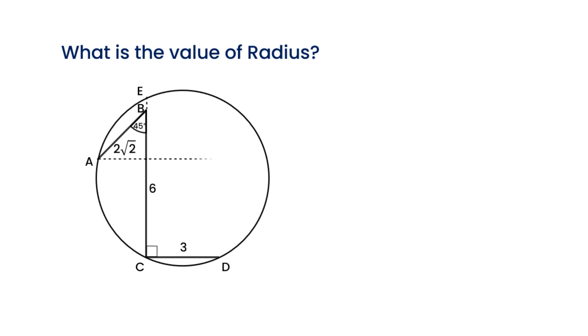Through point A, make a perpendicular segment to CE, intersect CE at point F, and intersect the circle at point G.